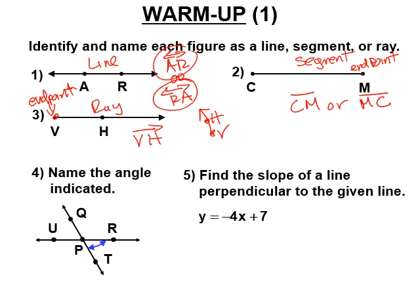You always use two letters for a ray. If there are three letters on it, you pick any two. So if there's an X there — if you say CX, that's just part of that line segment, not the whole thing. If I have an X on this one somewhere, you pick any two of the letters and name it with any two.